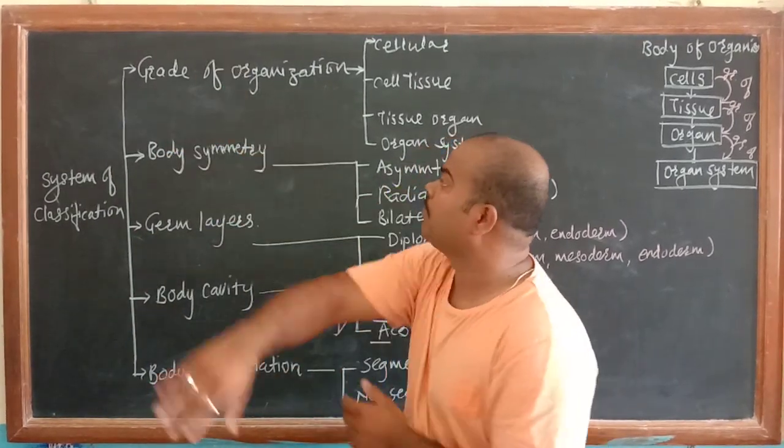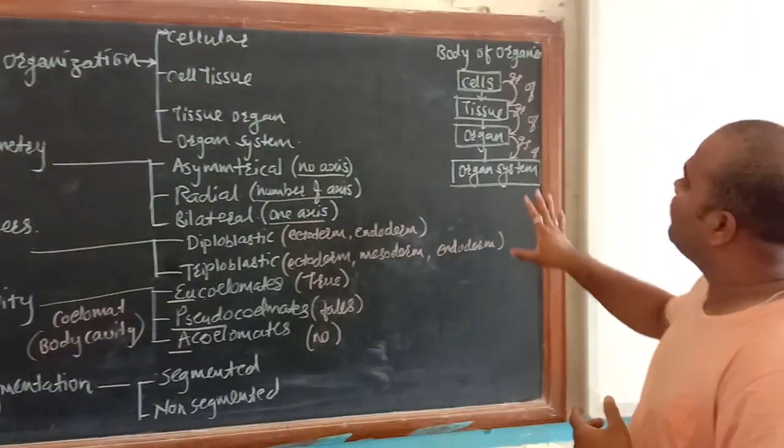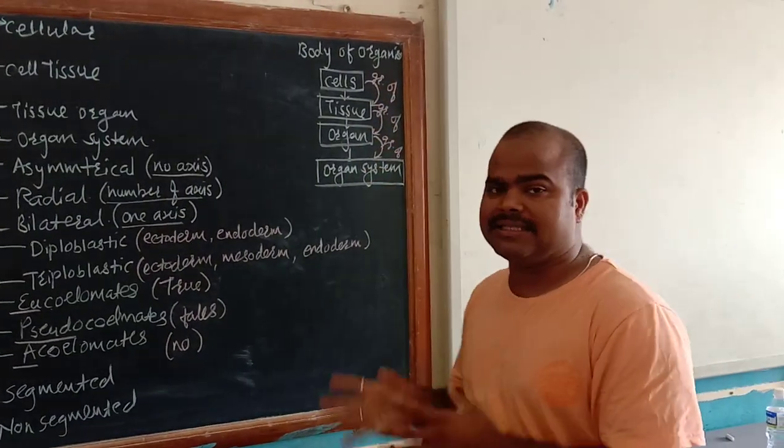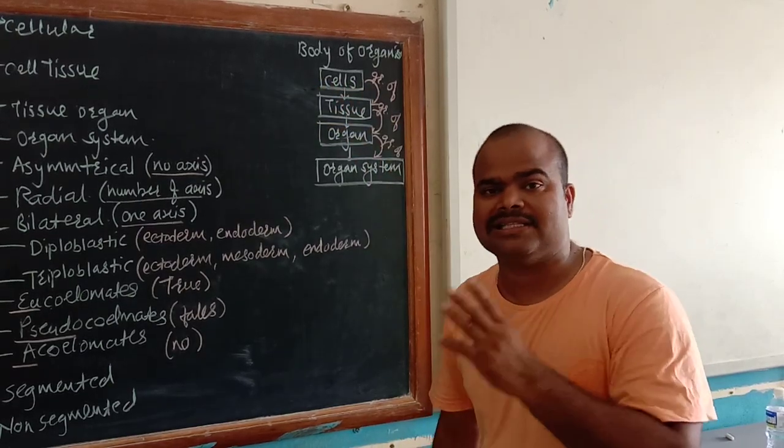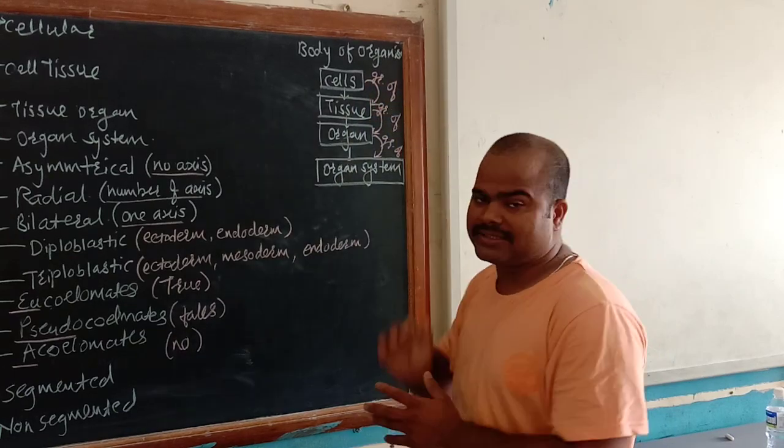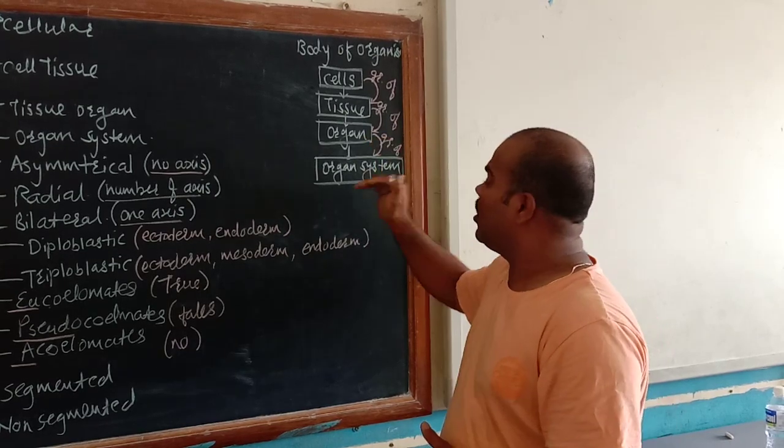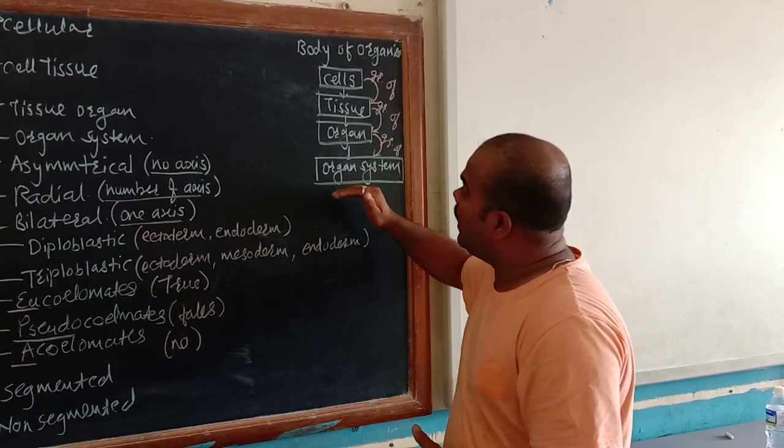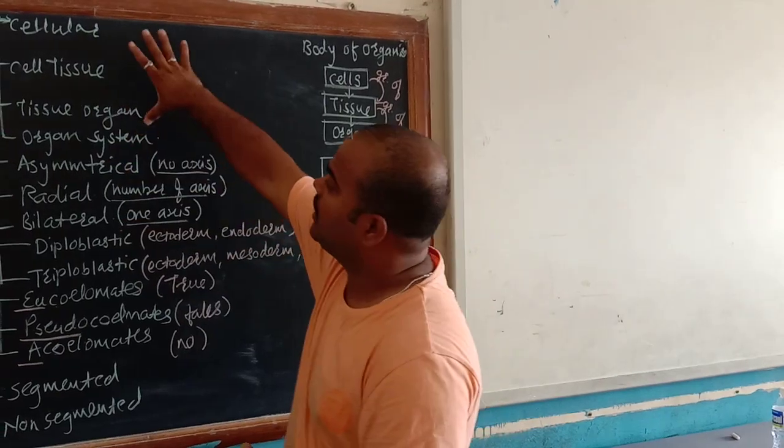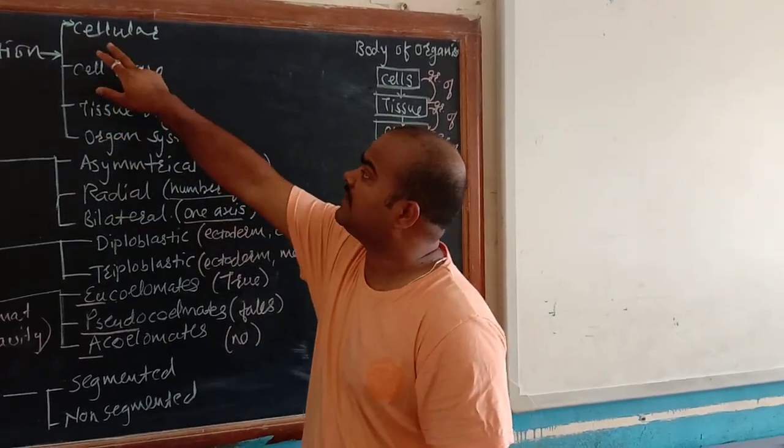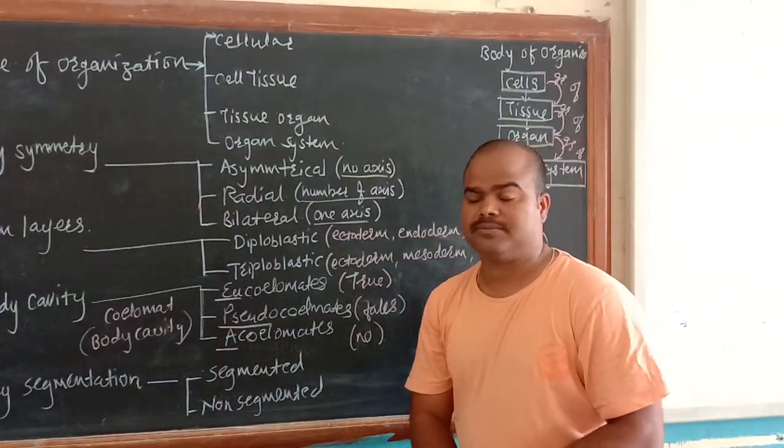We'll start with grade of organization. First, we'll see how the body of an organism is organized. All organisms start from a single cell. Afterward, a group of cells is tissue, a group of tissues is an organ, and a group of organs is an organ system. According to these four stages, grade of organization has four different types: cellular, cell-tissue, tissue-organ, and organ system.